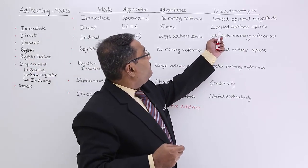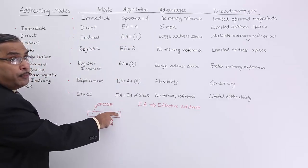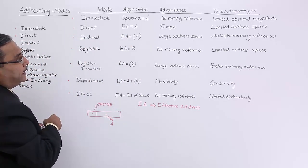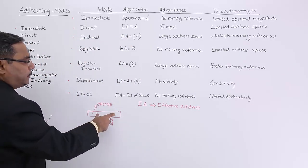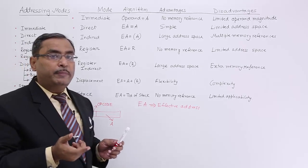And there is a limited address space because depending upon the number of bits here, this space will get limited. If we are having say 10 bits, we can have maximum 1024 combinations and so on.